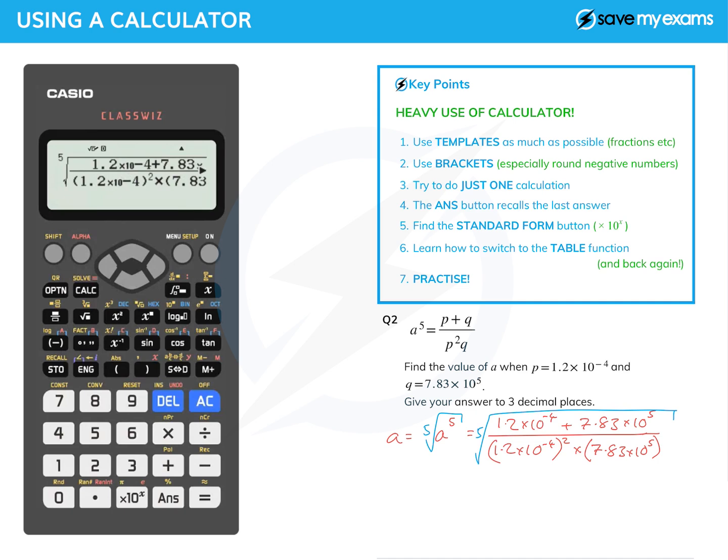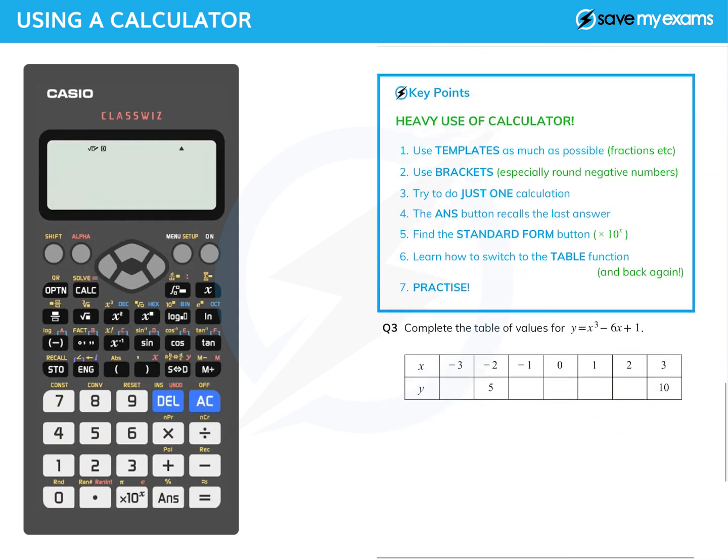That will give me an answer and I get 37.01071725. But I've been asked for it to three decimal places, so I look at the fourth digit. It's five or more, so I round the previous one up, giving me 37.011.